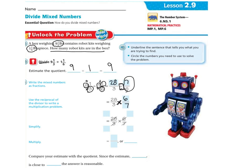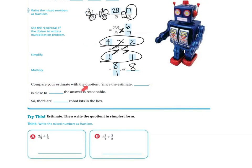It's always easier if you cross-cancel. Seven can go into seven one time, and seven can go into 28 four times. I can also cross-cancel the three and the six: three goes into three one time, and three goes into six two times. Now multiplying straight across: four times two is eight, and one times one is one — eight over one is eight. Comparing the estimate of nine to the quotient of eight, the answer is reasonable. There are eight robot kits in the box.